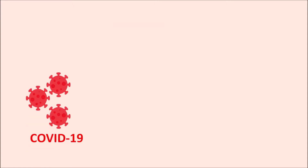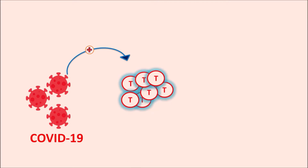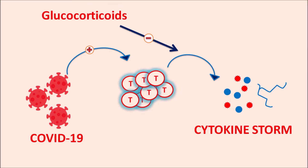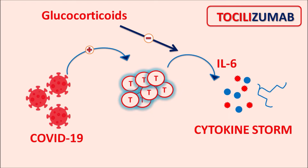One of the important indications of tocilizumab is COVID-19 infection. This coronavirus can stimulate immunity, promote T cell activity, and these T cells can release a variety of cytokines. When these cytokines are suddenly released, they can produce a cytokine storm in patients. Since cytokines produce inflammation and when they are not controlled, they can cause severe inflammation leading to damage of many organs. Glucocorticoids can control T cell activity so that cytokines are not excessively released, and among these cytokines, IL-6 is one important mediator controlled by tocilizumab, which acts as an antagonist at IL-6 receptors to control the cytokine storm and inflammatory response.